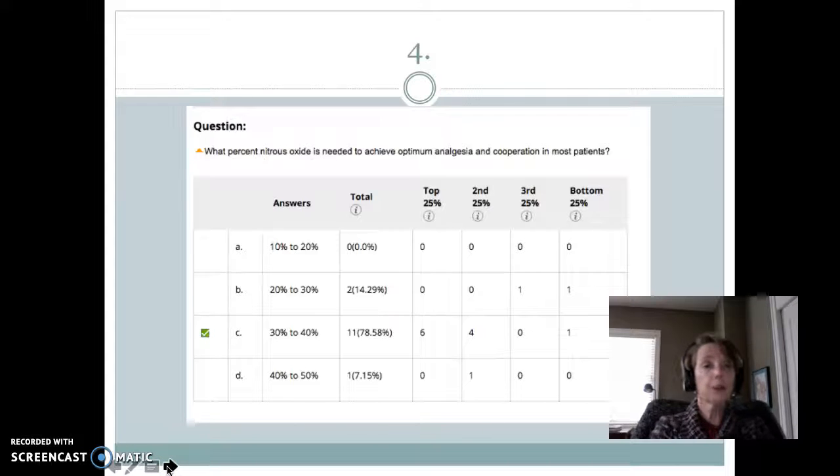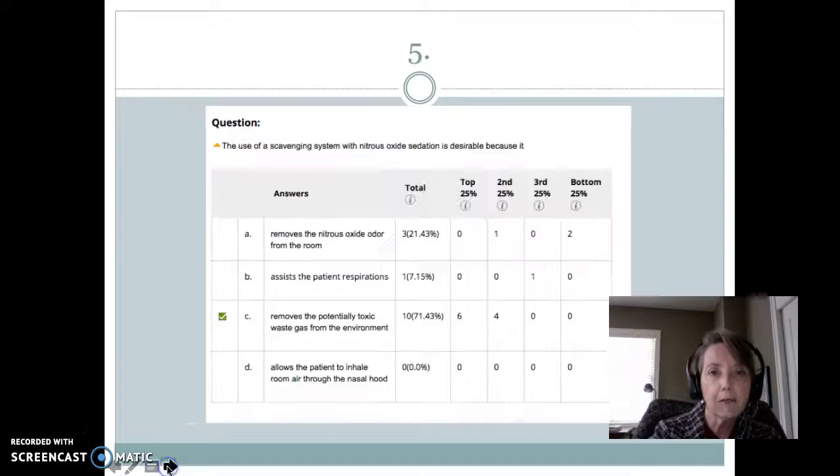Another question was, what percent nitrous oxide is needed to achieve optimum analgesia and cooperation in most patients? In fact, that's anywhere between 30 and 40% nitrous oxide for optimum analgesia. And you'll see that this week as you sedate each other. Generally, our level of nitrous oxide is anywhere between 30 and 40%.